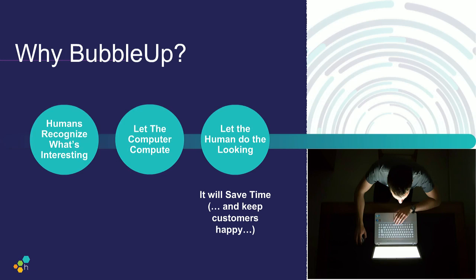There are some people who can stare at a bump in their data and say, 'Ah, that looks like a SQL failure.' But for all the rest of us, we'd like to find a way to help support that. So we built this tool called BubbleUp — it's meant to help humans recognize the parts that are interesting. We'll turn the big questions about how data sets are different over to the computer, and let the computer do the computing while you do the looking and recognizing. This method can save a ton of time for analysis and makes your customers happy because your system is up faster.